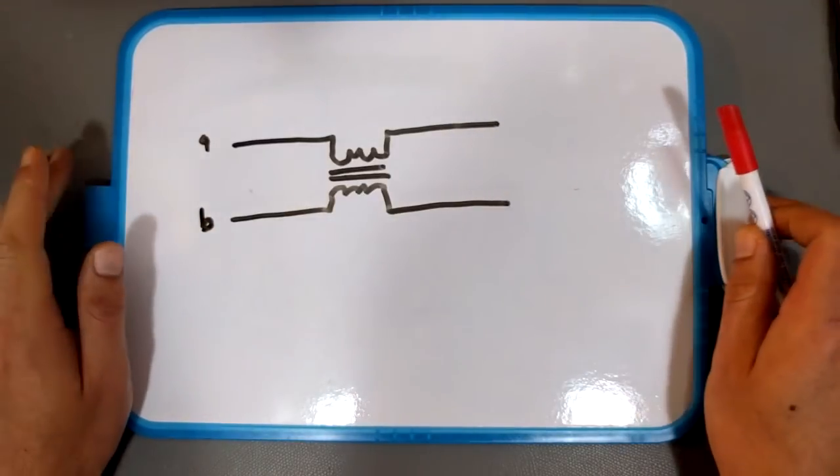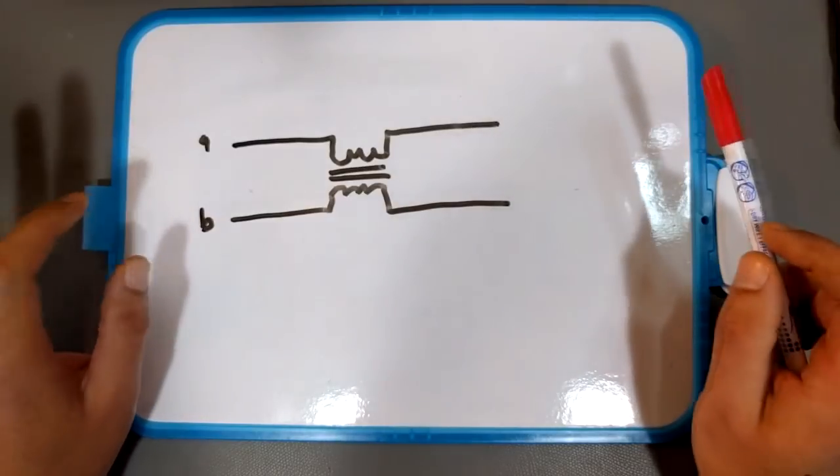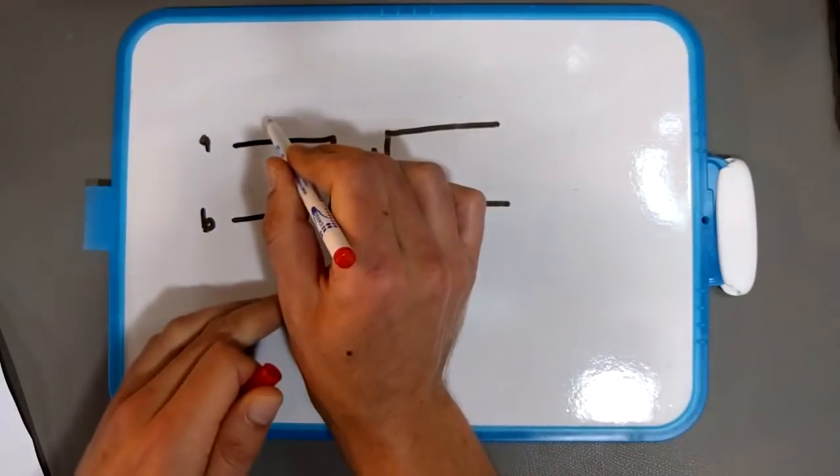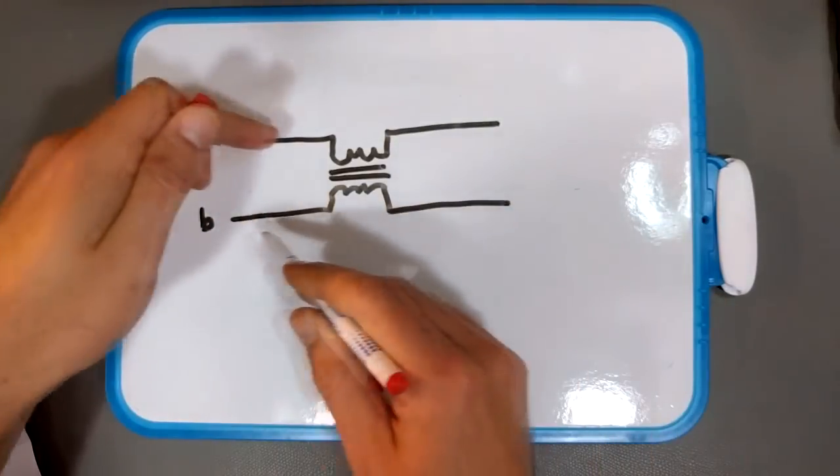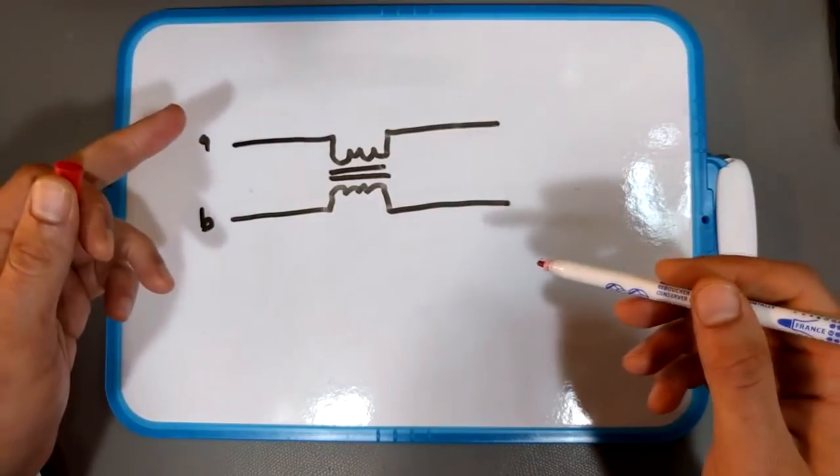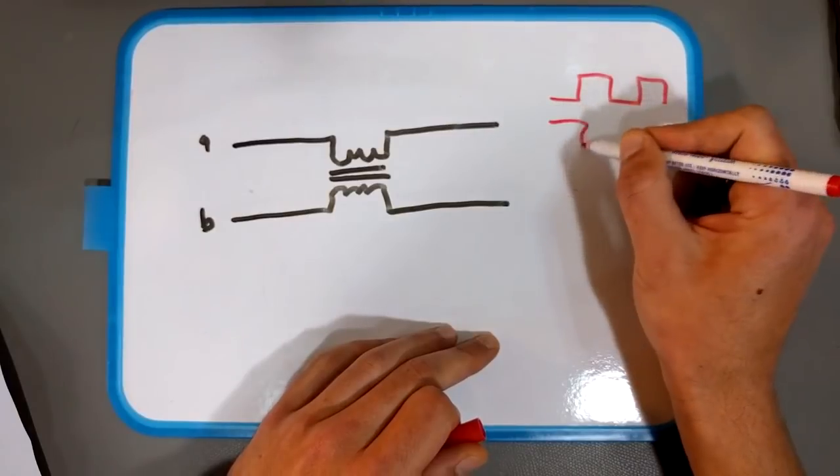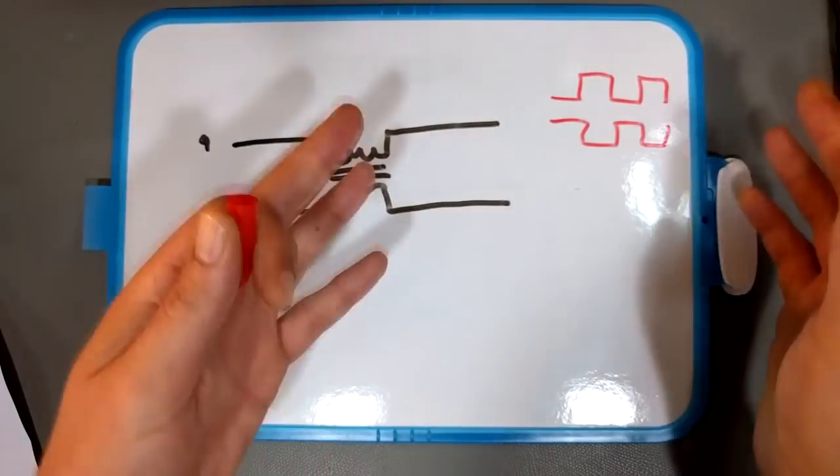Okay well normally for reasons which are kind of beyond the scope of this video we use differential signaling. And what that means is that you have basically two signal lines here in your wire and you have equal but opposite signals. So like you'd have a signal on one line like this and on the other line it would look like that. More or less.